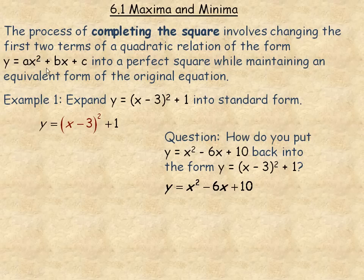This lesson will show how to take a quadratic relation of the form y equals ax squared plus bx plus c and apply a procedure called completing the square, which changes this into an equivalent form that we can easily see where the vertex is.